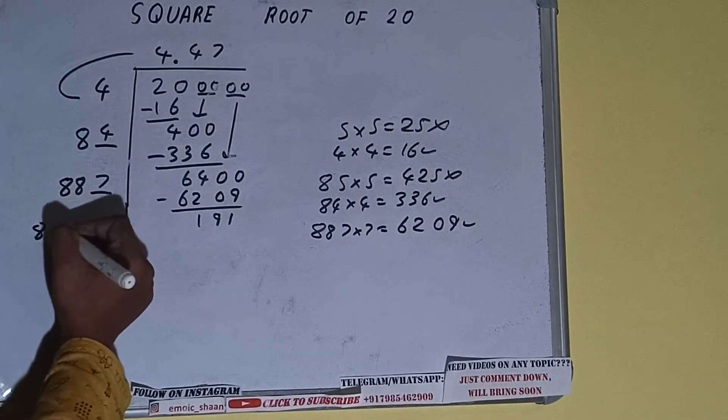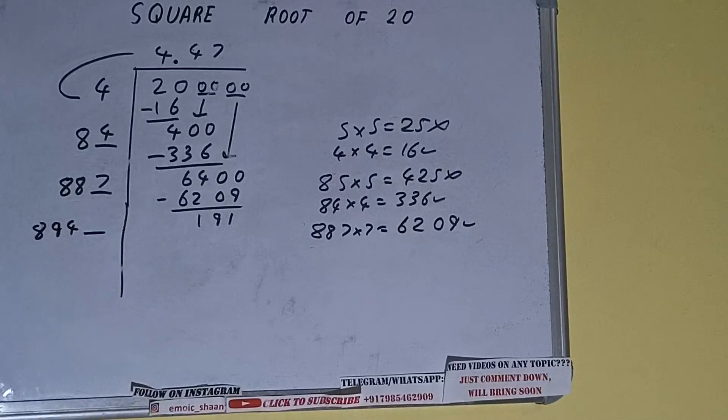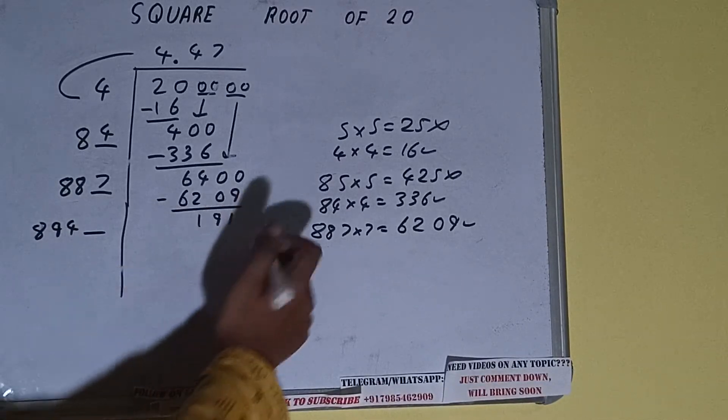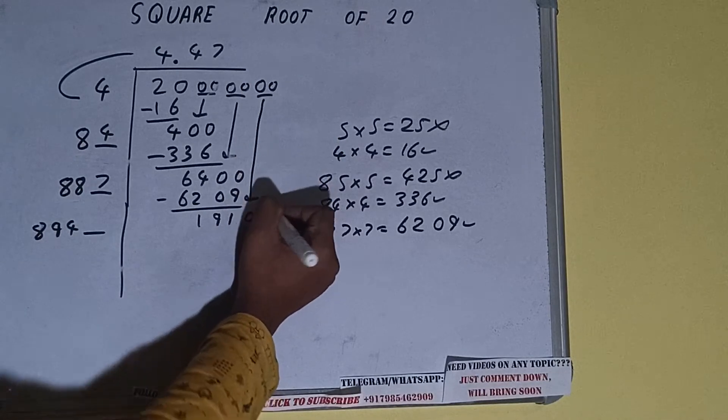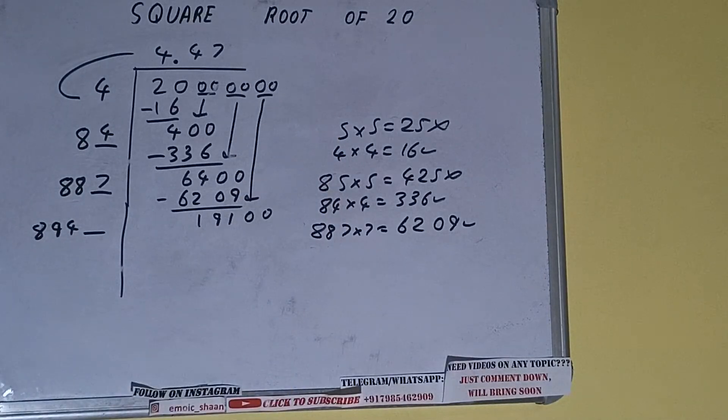Now 887 into 7 we did, so add both. 887 plus 7 will be 894 and 1 digit extra. And this number we need to make it big, so bring the next pair of zeros down and it will become 19100.